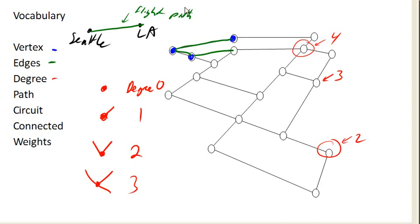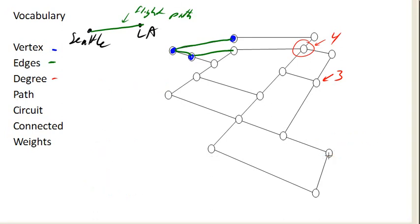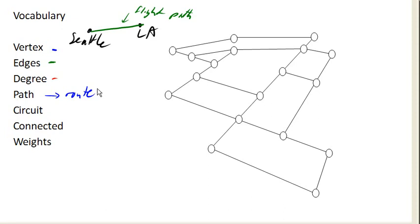So now, path. On a graph, we can talk about routes from one location to another. A path is a route along our graph that starts and ends at different locations. So for example, if I start here and walk this way, this way, this way, this way, this way — this is a path on the graph.